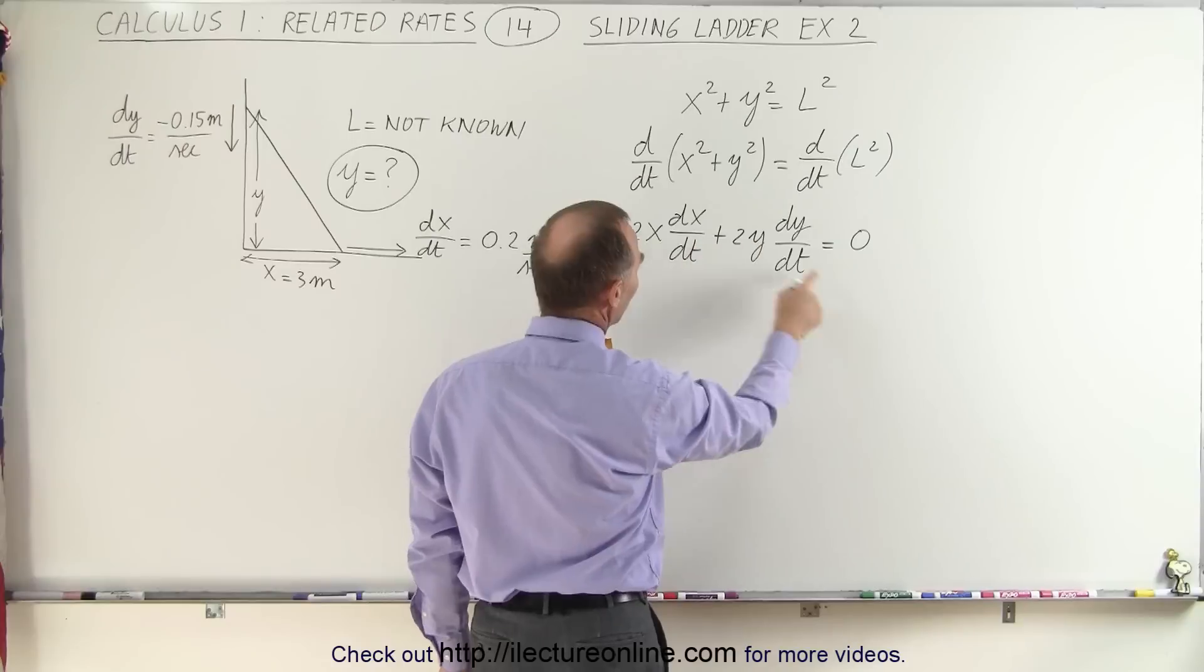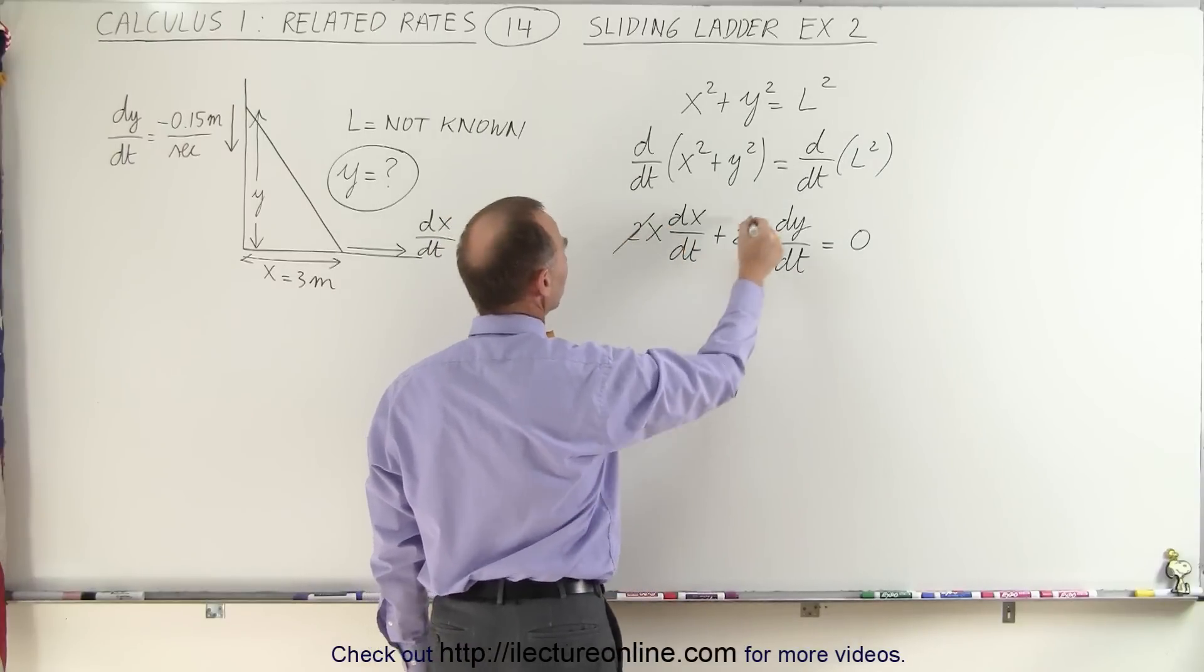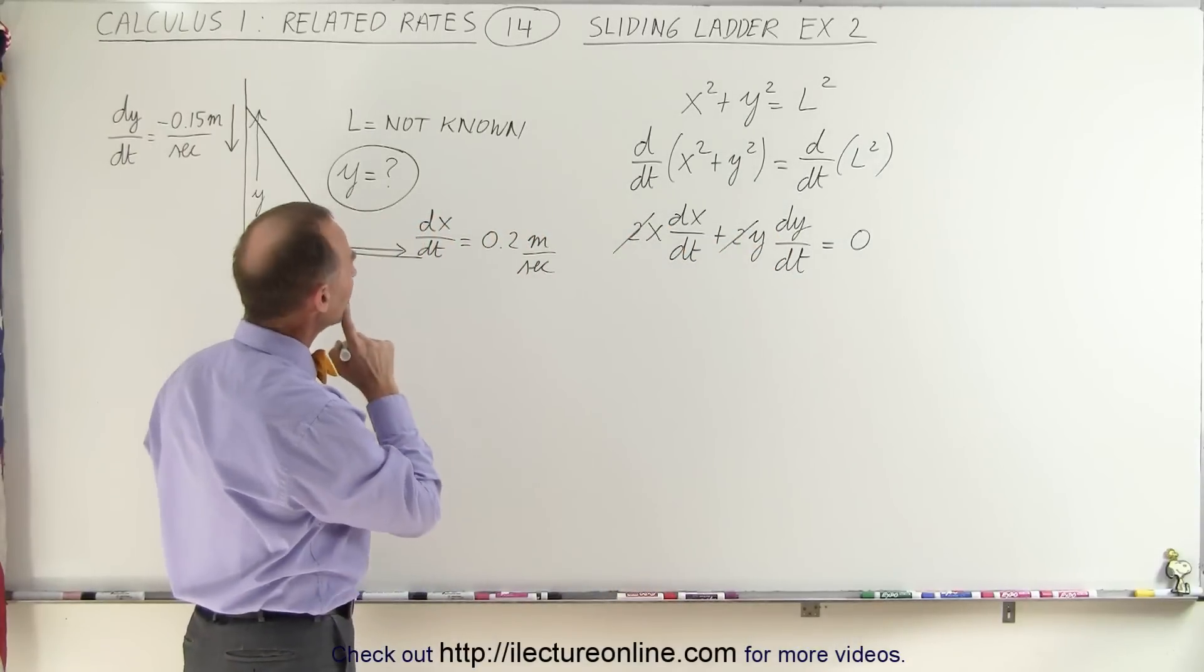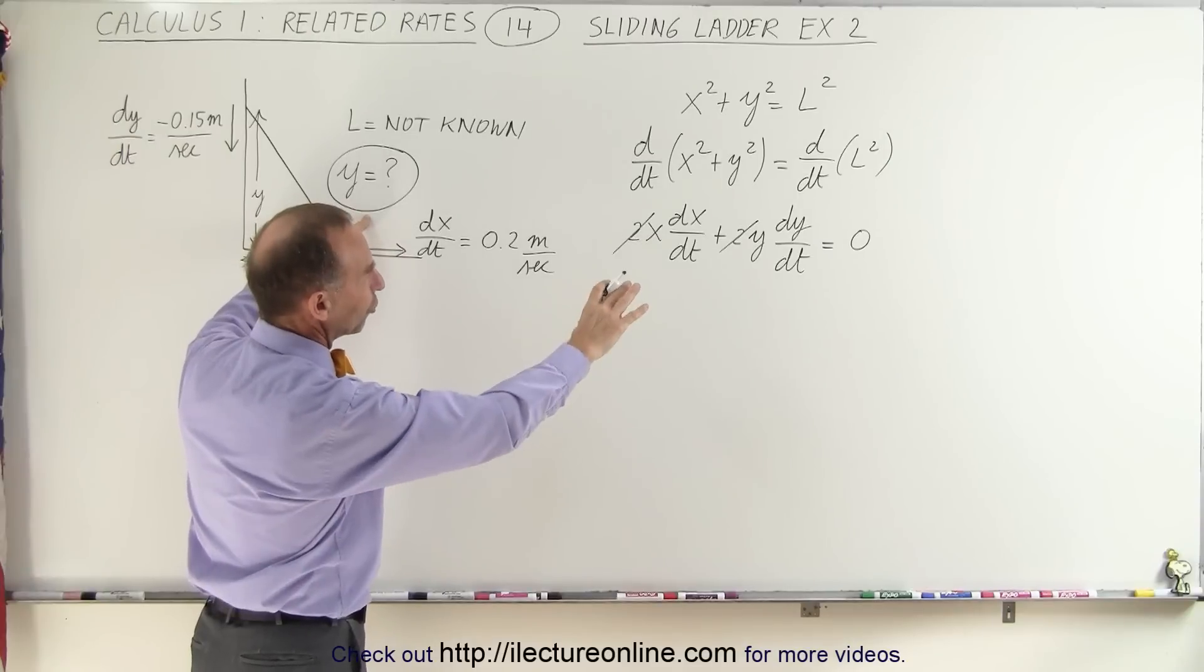We can now divide both sides of the equation by 2 to get rid of the 2, it simplifies it. And now, since we're looking for y, let's solve this equation for y.